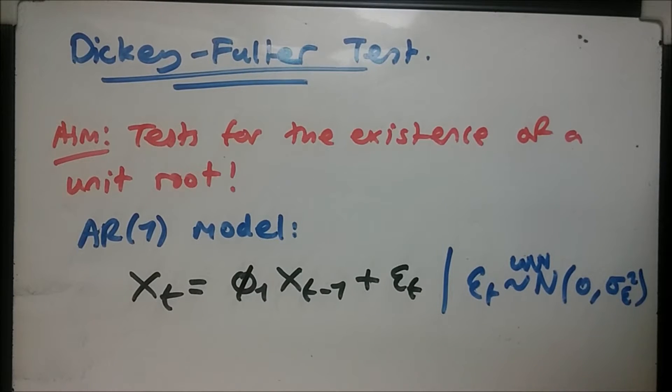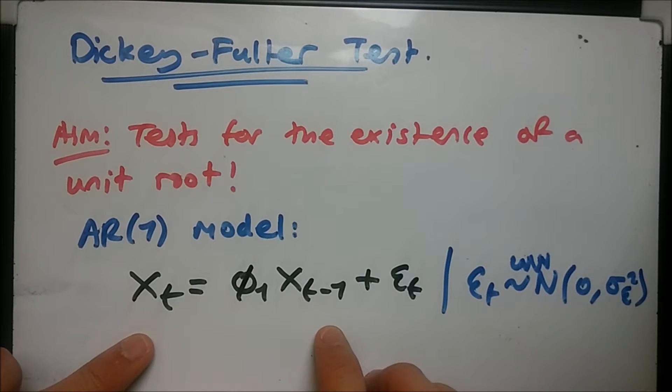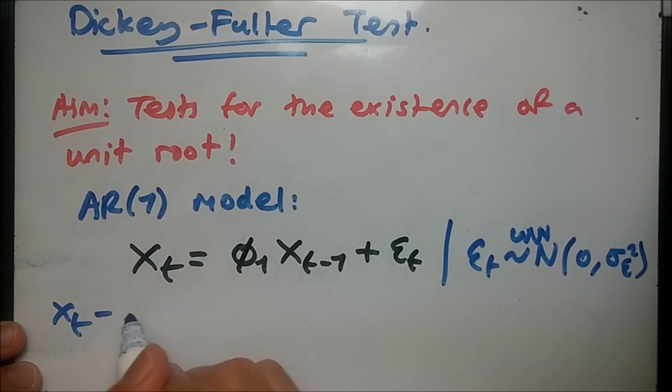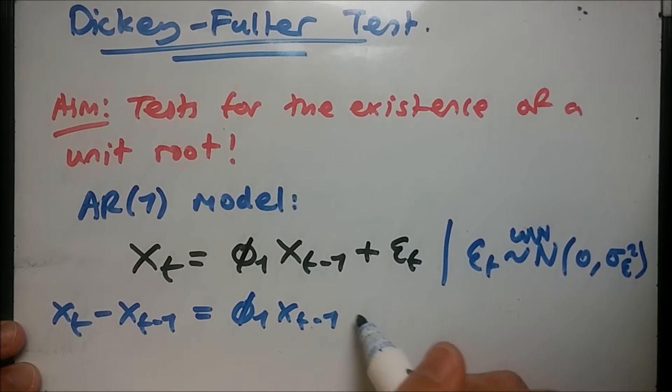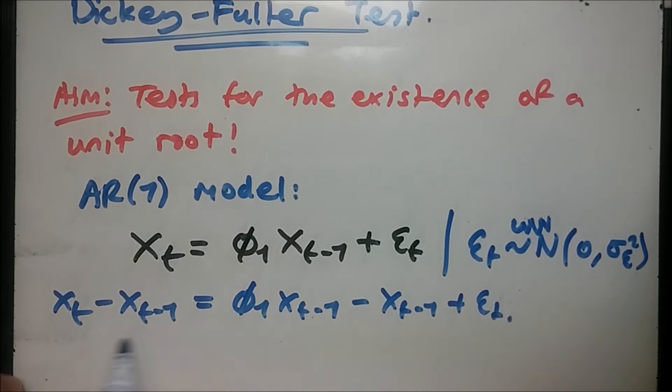So what do we do with this AR(1) model? We want to show that this can be transformed into a Dickey-Fuller equation which involves something known as a first difference operator. First, let us expand both sides and subtract X_t minus 1 on both sides. Subtracting both X_t minus 1 we should have X_t subtract X_t minus 1 equals phi_1 X_t minus 1 minus X_t minus 1 plus epsilon_t.